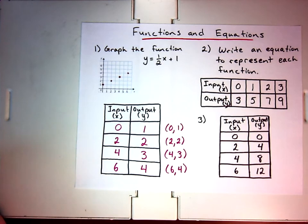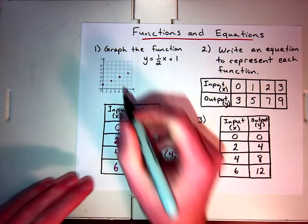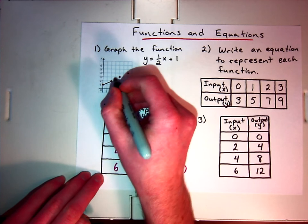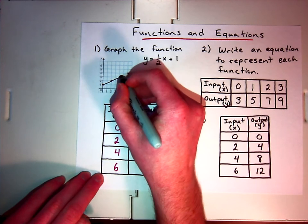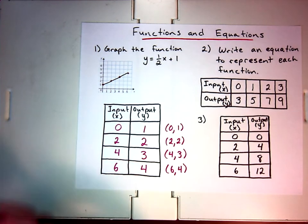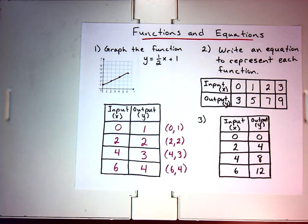And we should have a straight line here for this function. And you'll notice a straight line. Like I said, for this problem, we should have a straight line. And that's what we call a linear function. It's creating a line. And so that's what we'd have to do for that problem.